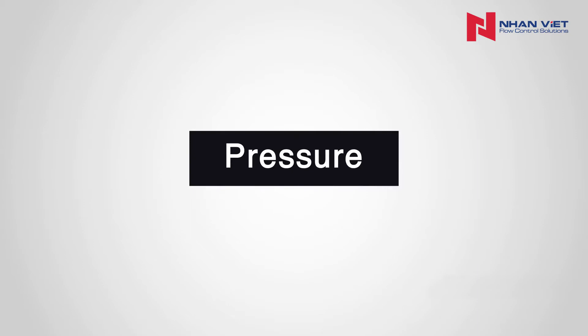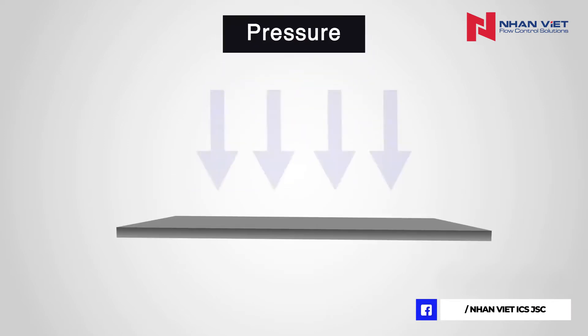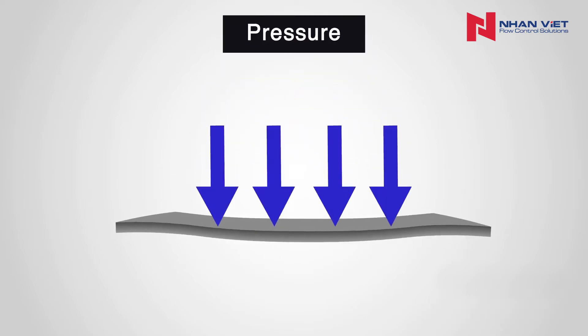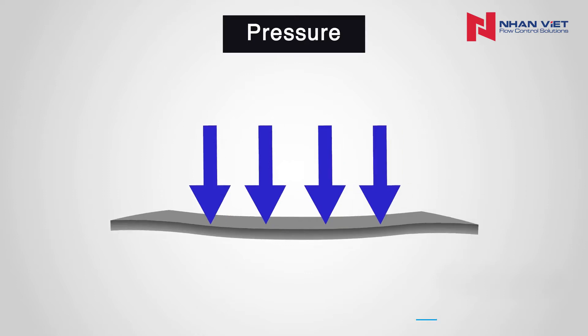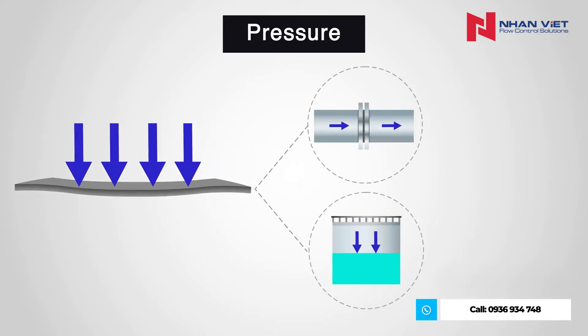To understand how a differential pressure transmitter works, we need to know some principles of pressure. Pressure is the result of force applied onto a unit of area. In the case of fluid and gas, this area would be the inside of a pipe, tank, vessel, or other sealed housing.